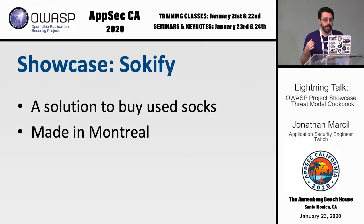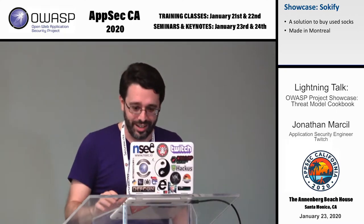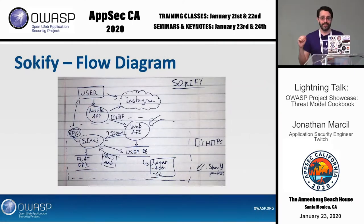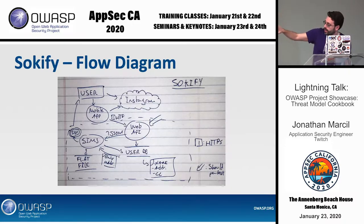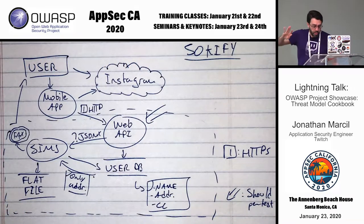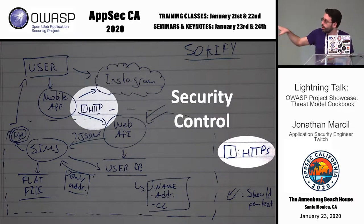The first showcase is Sockify — a made-up solution to buy used socks that we created in Montreal. This example is interesting because it's literally hand-drawn on a sheet of paper. You can see clearly it's a simple system that interacts with Instagram. Looking at the top, it has a web API, a mobile app, and some other components. The diagram is monochrome with no color — it was just drawn on the sheet. All around it you can see notes, which are the security controls you might want to upgrade in the system you just modeled.